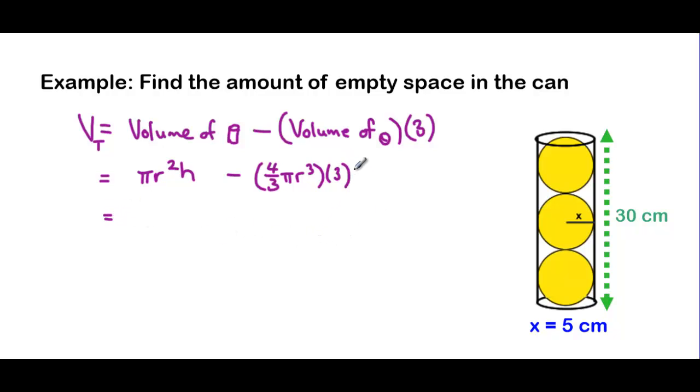We can do a little bit of simplification before we start inserting our numbers. We can see that 4/3 πr³ times 3. We have a multiply by 3 and a divide by 3. So when we multiply and divide by 3, they sort of cancel each other out. So we're just left with 4 times πr³ left over.